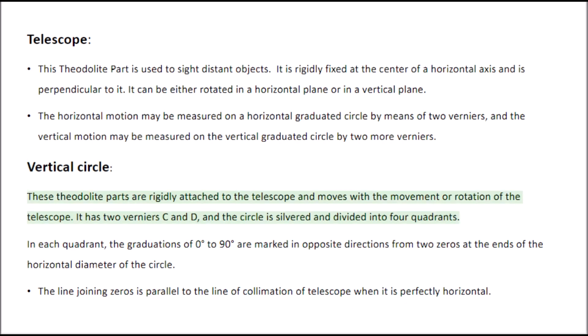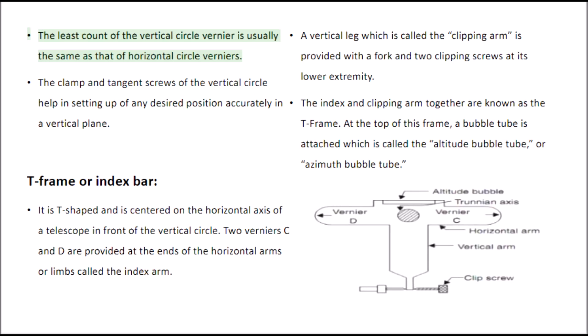These theodolite parts are rigidly attached to the telescope and move with its rotation. It has two verniers C and D, and the circle is silvered and divided into four quadrants. In each quadrant, the graduations of 0 to 90 degrees are marked in opposite directions from two zeros at the ends of the horizontal diameter of the circle. The line joining zeros is parallel to the line of collimation of the telescope when it is perfectly horizontal. The least count of the vertical circle vernier is usually the same as that of the horizontal circle verniers. The clamp and tangent screws of the vertical circle help in setting up any desired position accurately in a vertical plane.